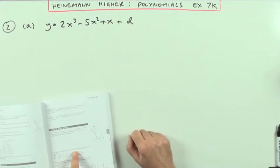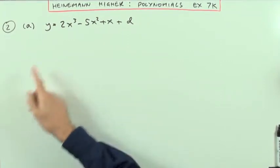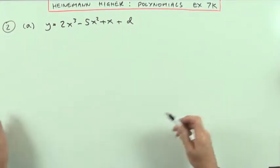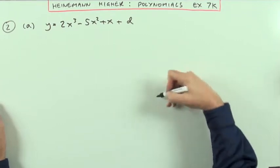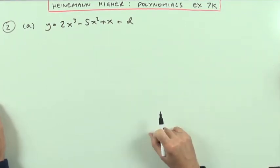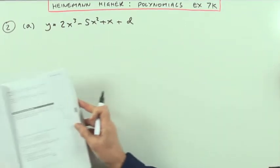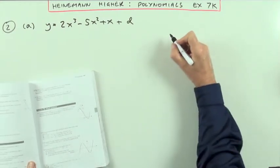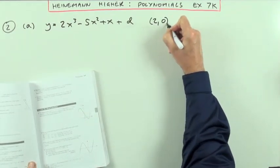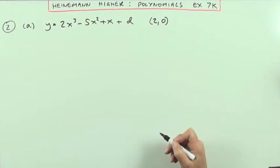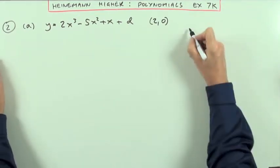Find d, the constant at the end, and the zeros of the function. Strictly speaking they should be saying that's the graph of the function, but they want the zeros, that is where the graph cuts the x-axis. It tells you one. For the first one, this one cuts the x-axis at 2, 0, so that's one of the zeros of the graph.